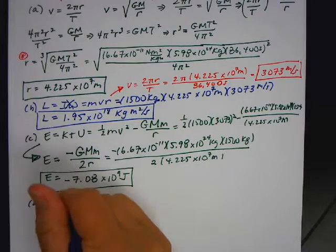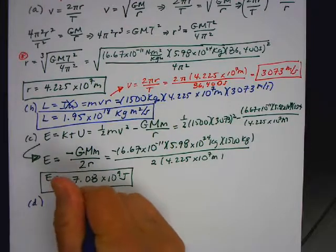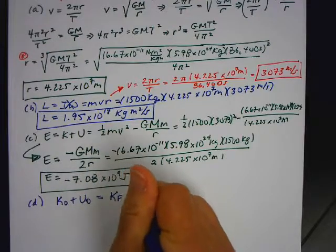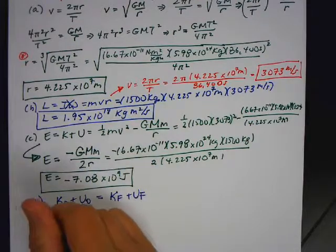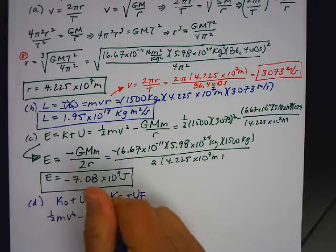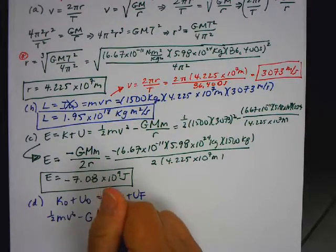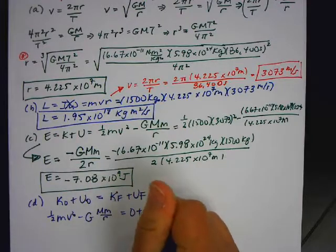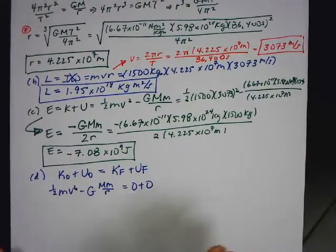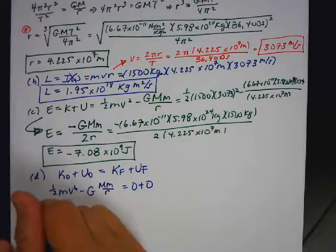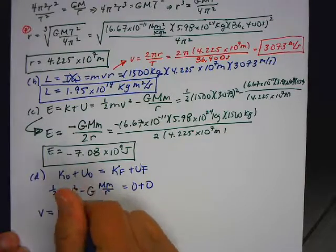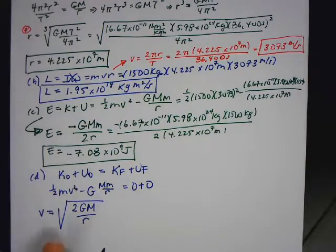So again, if you were to derive this, you would say K0 plus U0 is equal to KF plus UF. And then you would have 1/2 mv² minus GMm over R is equal to 0 plus 0. And when you rearrange that, you end up getting that V is equal to radical 2GM over R.